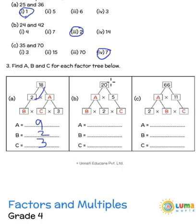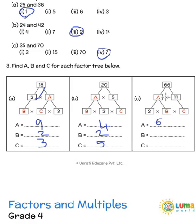For the next factor tree, 20 is 5 multiplied by what number? 5 fours are 20, so A is 4. A is again split: 4 is 2 into what, so B is 2. For 66, we have 11 multiplied by 6. 6 is split as 2 into 3, because 2 threes are 6, so B is 3 and C is carried forward as 11.